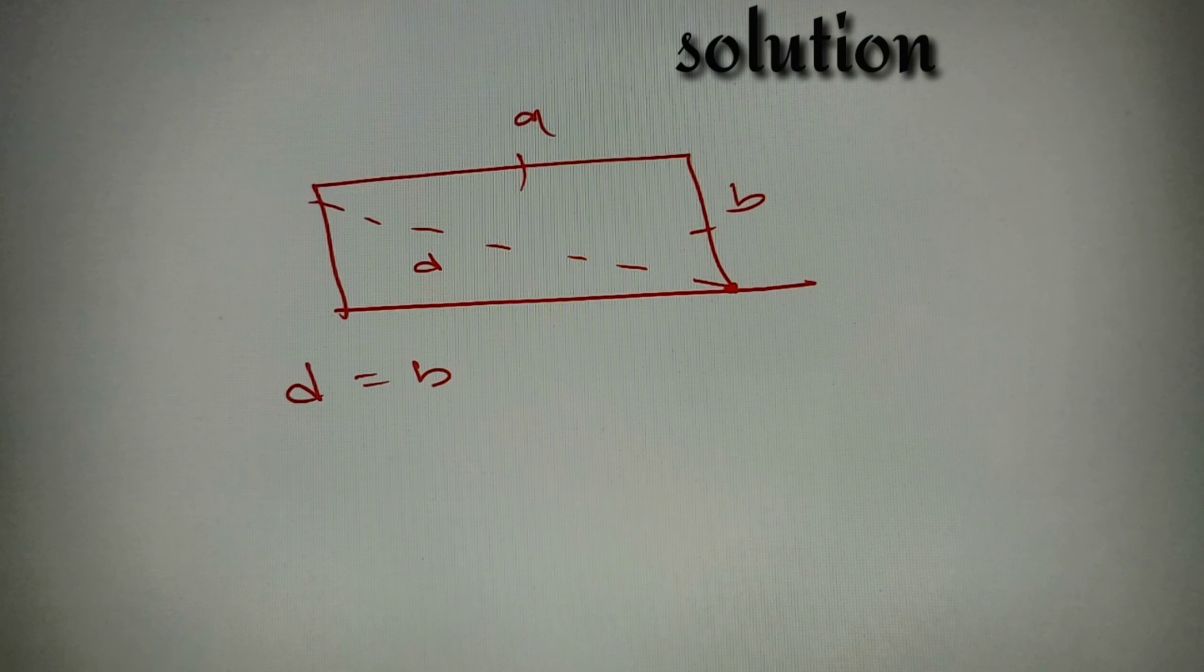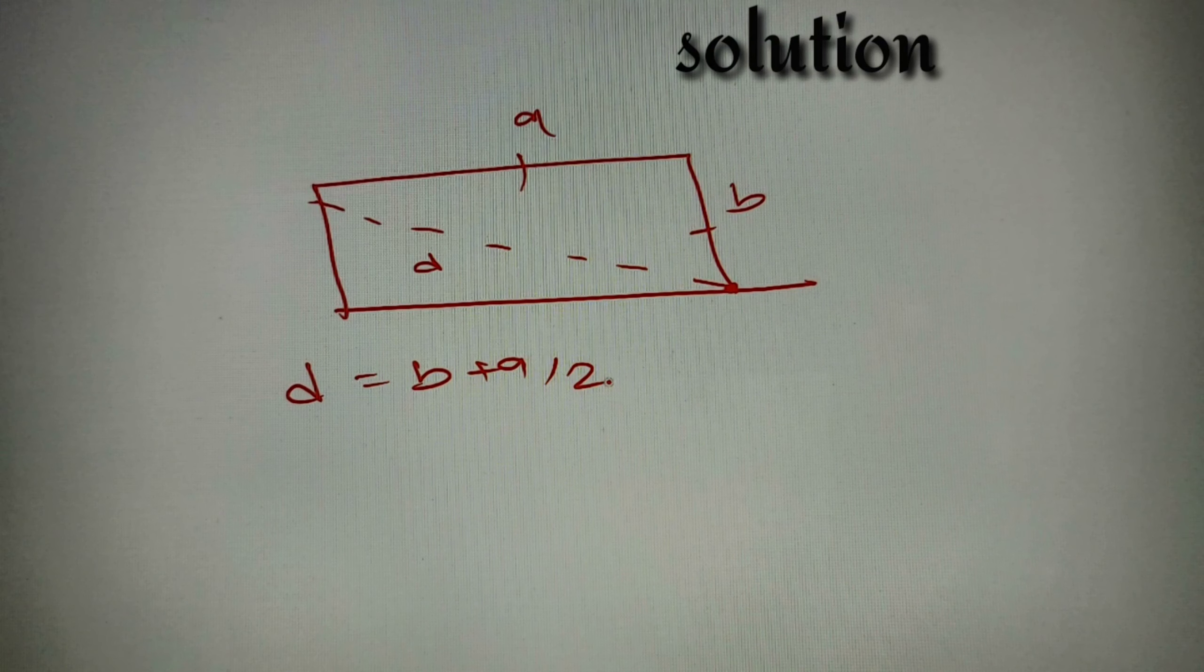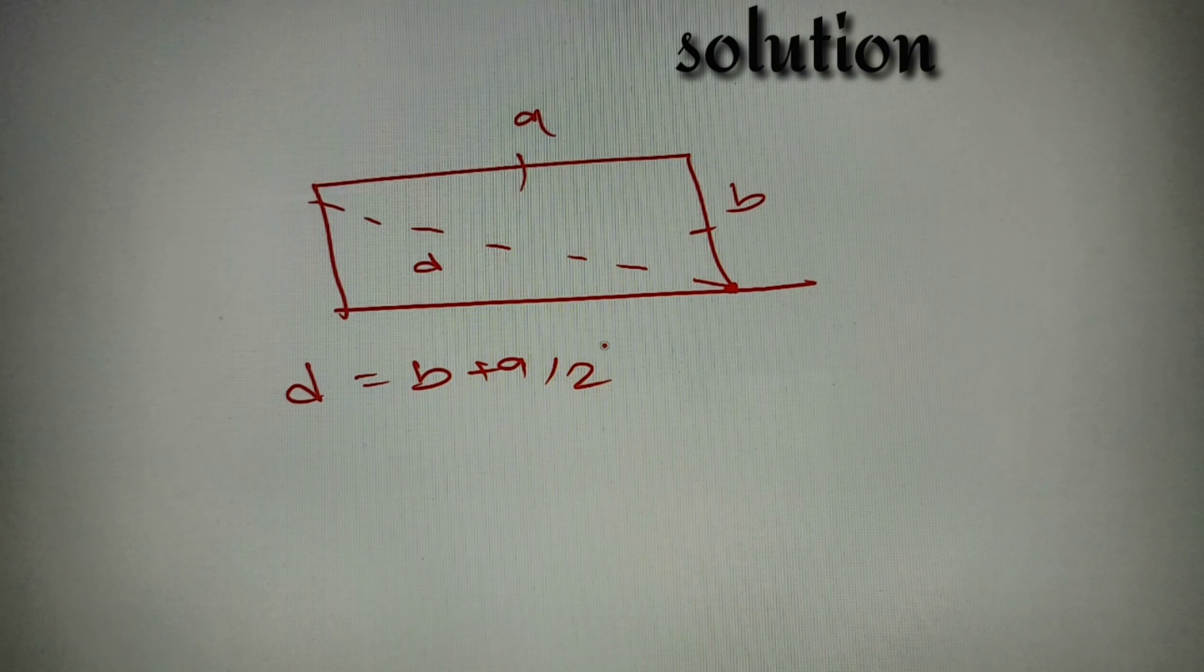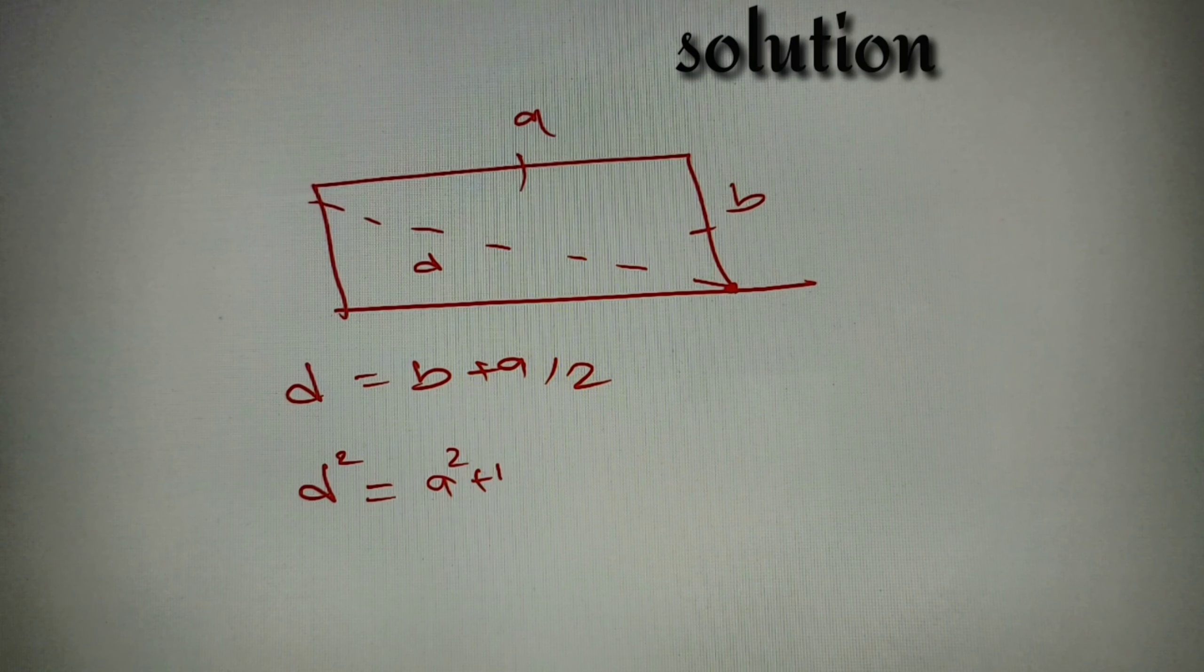Now we can say that D is equal to B plus A by two according to our given question. Since it is a rectangular field, it will follow the properties of a rectangle. So I can say that D square is equal to A square plus B square.